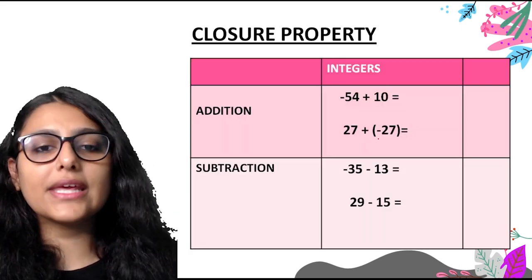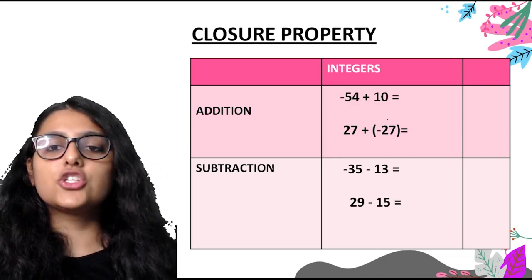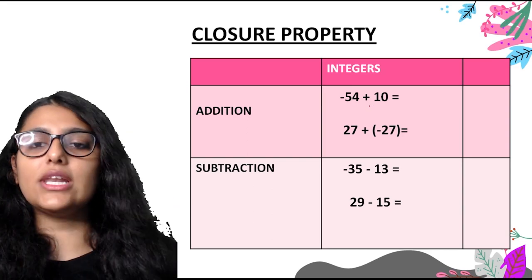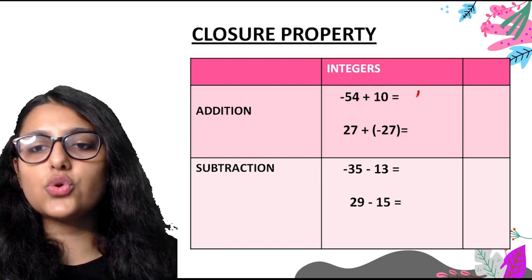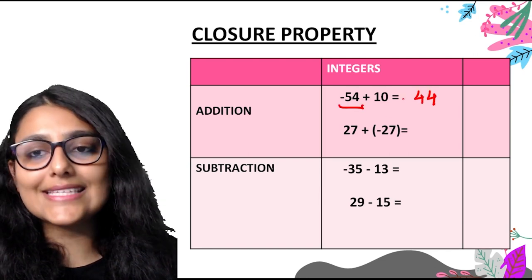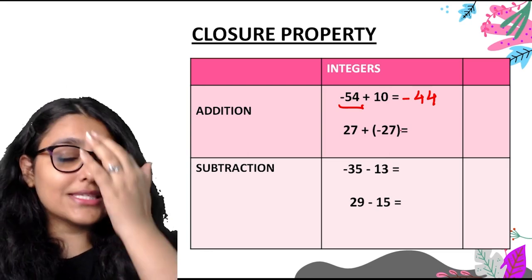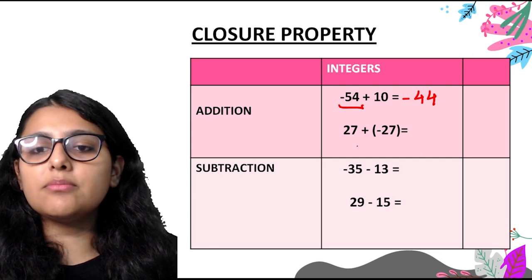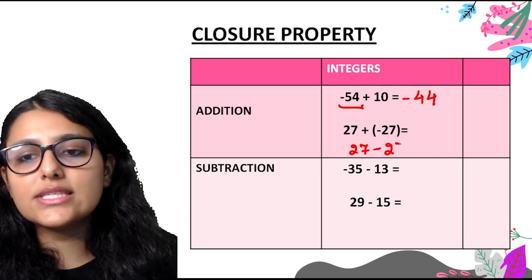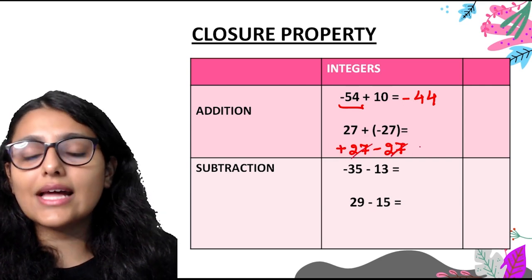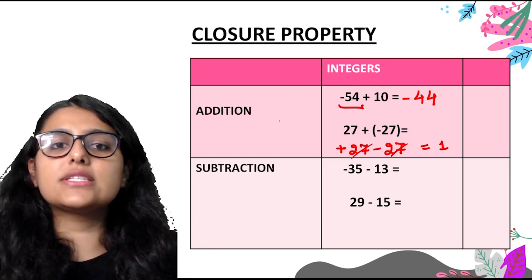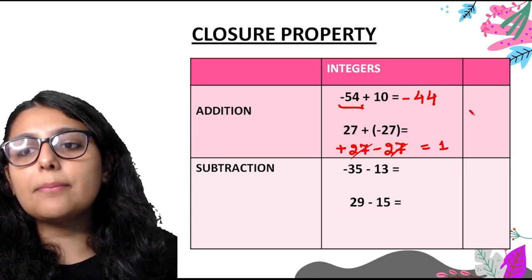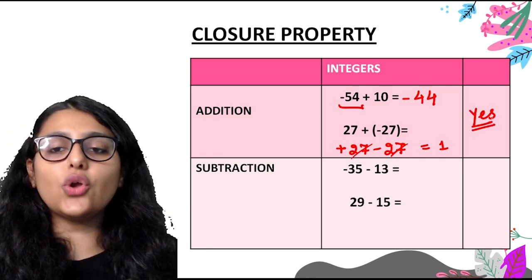In this table, the first operation is addition. We have minus 54 plus 10. One negative and one positive sign, so we subtract: 54 minus 10 gives 44, and the sign follows the larger number, giving minus 44. Is this an integer? Yes, minus 44 is a negative integer. Second example: 27 plus minus 27. Same number with opposite signs cancels out, giving 1, which is also an integer. So yes, the closure property holds true for addition of integers.